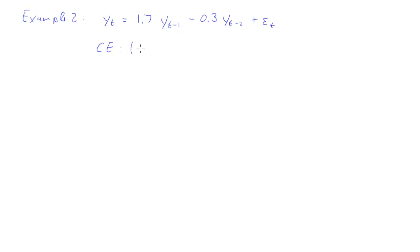So that's lambda squared minus 1.7 times lambda plus, now because the coefficient is minus 0.3, and that is set equal to 0.